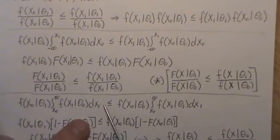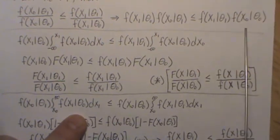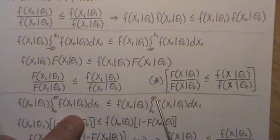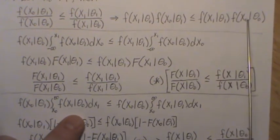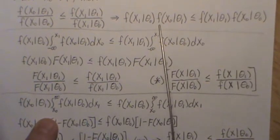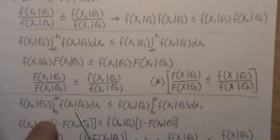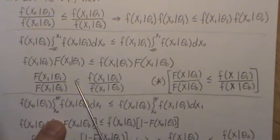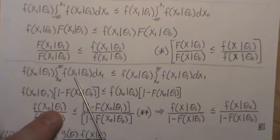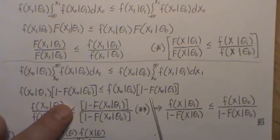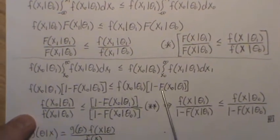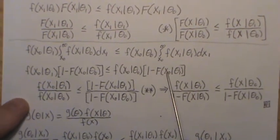We take this inequality and integrate both sides with respect to x_1, from x_0 to infinity. The pieces that don't contain x_1 come out in front of the inner integration. What remains is: here, that's just the survivor function plugged in — and similarly on the other side, that's one minus the CDF, plugged in at x_0, given theta_1.